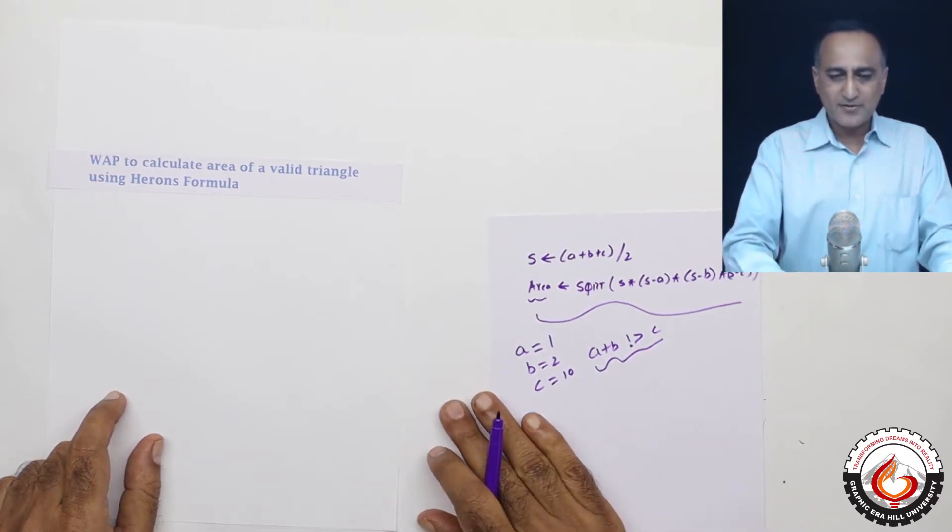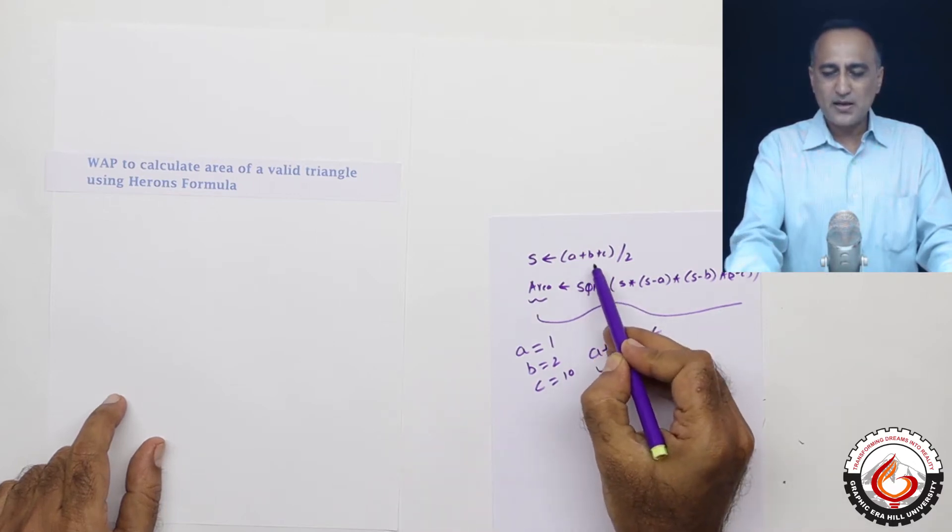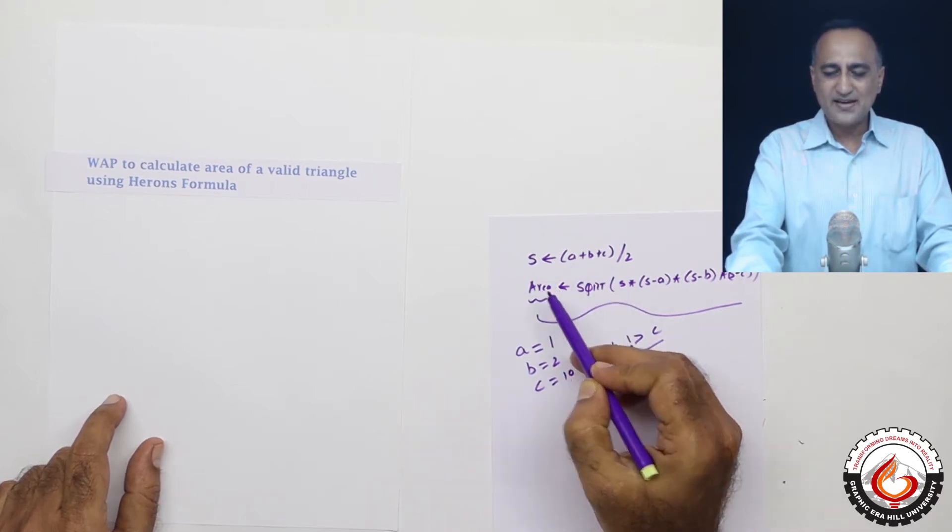So in order to calculate the area of a triangle using Heron's formula, we will require variables A, B, C, S and area.